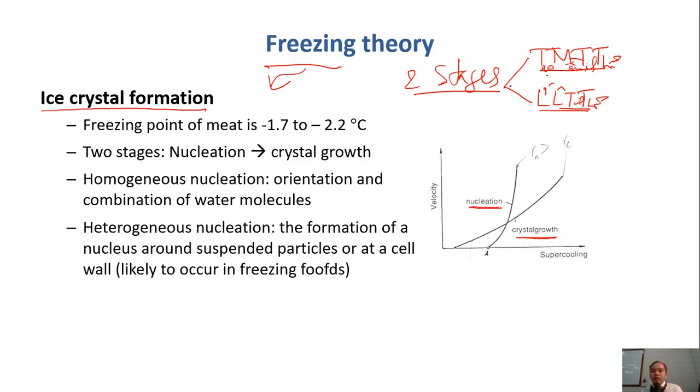Freezing or crystallization occurs through two stages: nucleation and crystal growth. What is nucleation? The formation of very small crystals. And crystal growth is that the liquid water here continues to crystallize on this nucleus. And then this is growth. This is crystal growth.